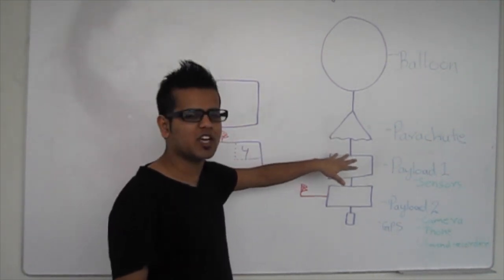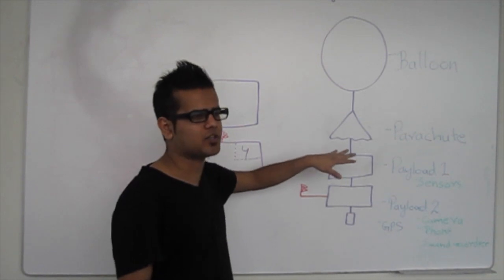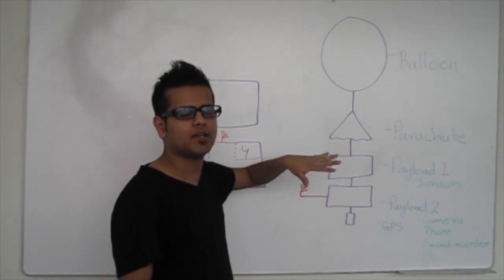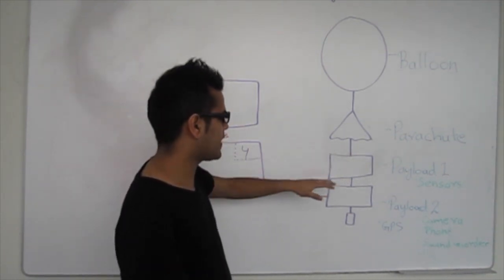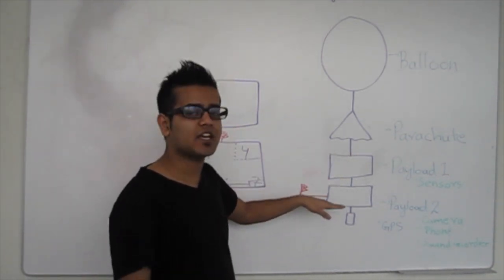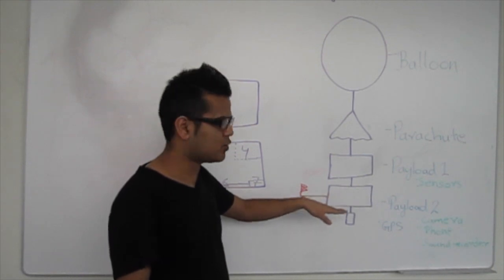This is a parachute with a sensor. It collects all data: temperature, pressure, height data. This is the main payload.